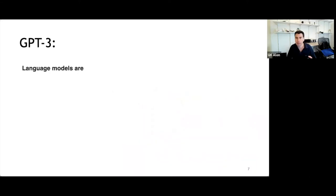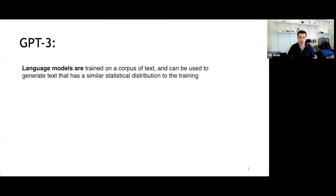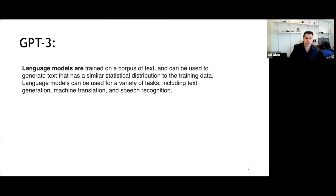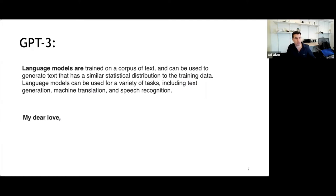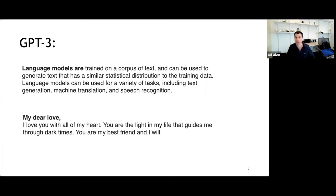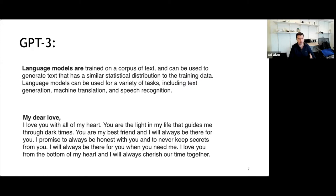One of the most famous language models these days is GPT-3. It is basically a very large transformer trained on vast amounts of data — basically the entire internet — and it can generate text on almost every subject. GPT-3 can generate text that is either informative or in a more creative way.